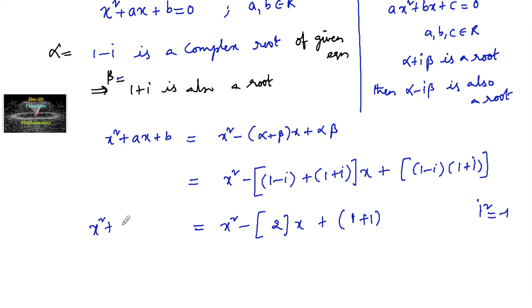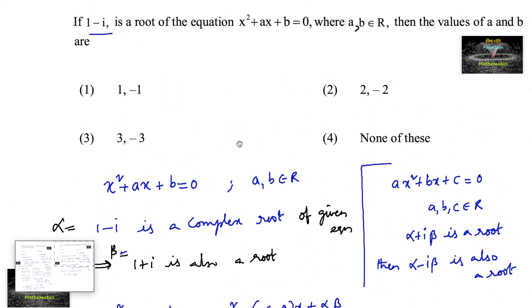So on comparing both sides, we have a is equal to minus 2 and b is equal to 2. So we can go with option 4, none of these, minus 2 and 2.